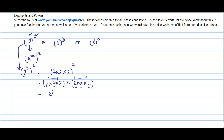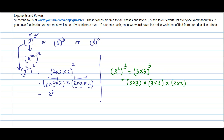Let's consider another example: three to the power two, to the power three. We can write this as three times three, all to the power three, which gives us three times three, three times three, three times three. If we let three times three equal 'a', this becomes a to the power three. What I notice again is that three is being multiplied by itself six times, so I can write this as three to the power six.